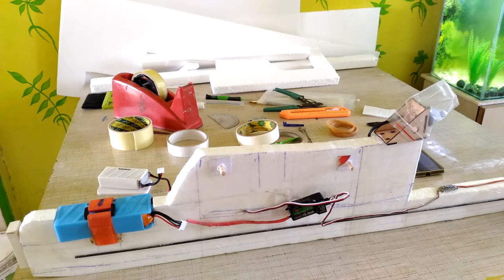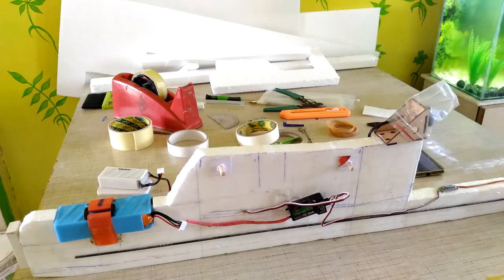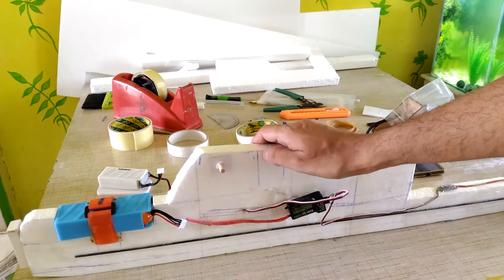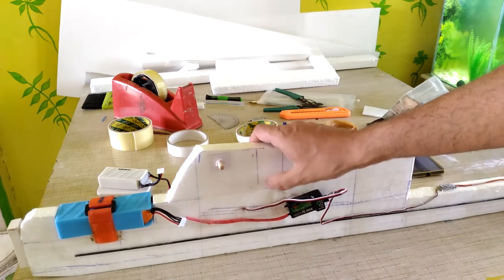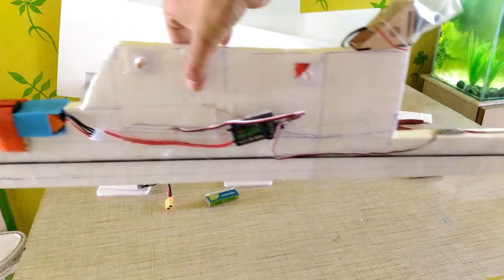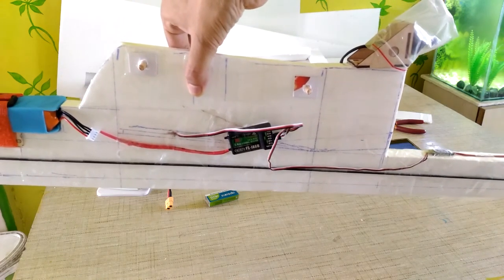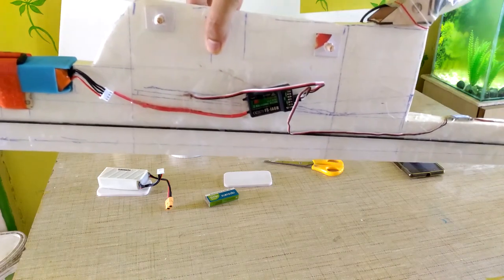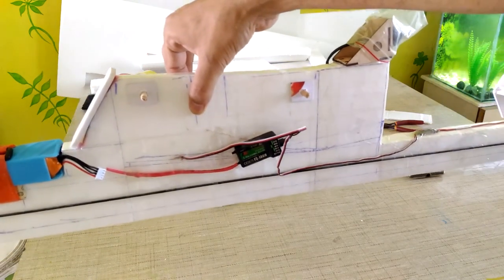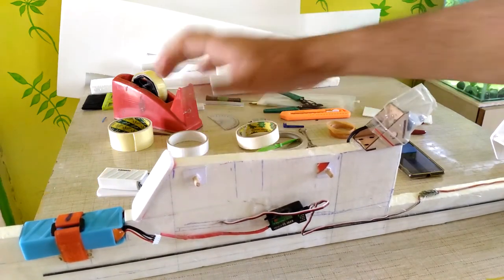So the fuselage is done. Battery is also attached and the CG is marked. So I am loosely holding the fuselage with two fingertips and just checking the CG. So after putting another eraser in the front the CG looks good.